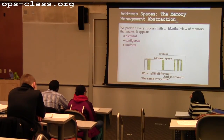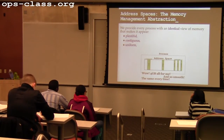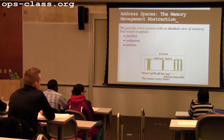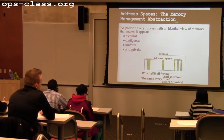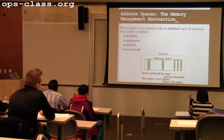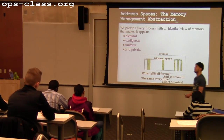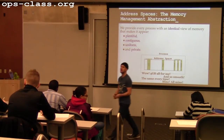The address space is uniform — every time I run, it's the same. Every time I run I can put my code in the same place and my variables in the same place. It's private — there are ways to share memory between processes, but the general assumption is that memory is private to each process. Without a dedicated mechanism for IPC, that memory is mine.